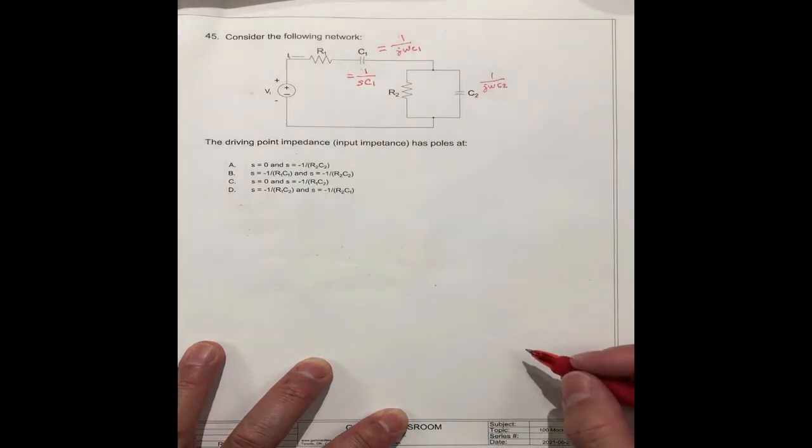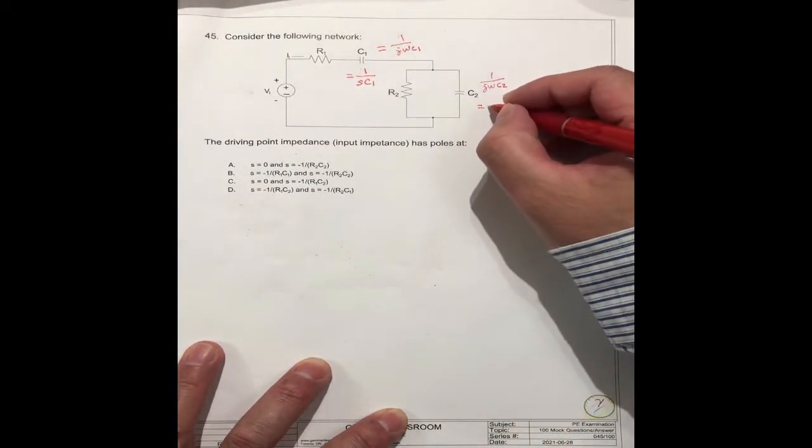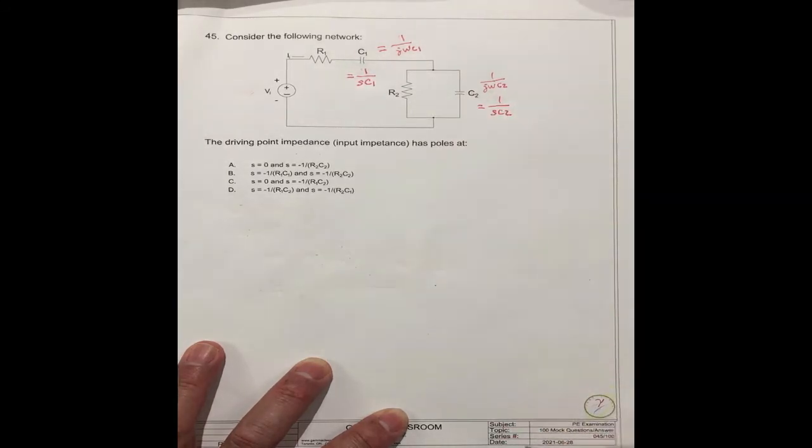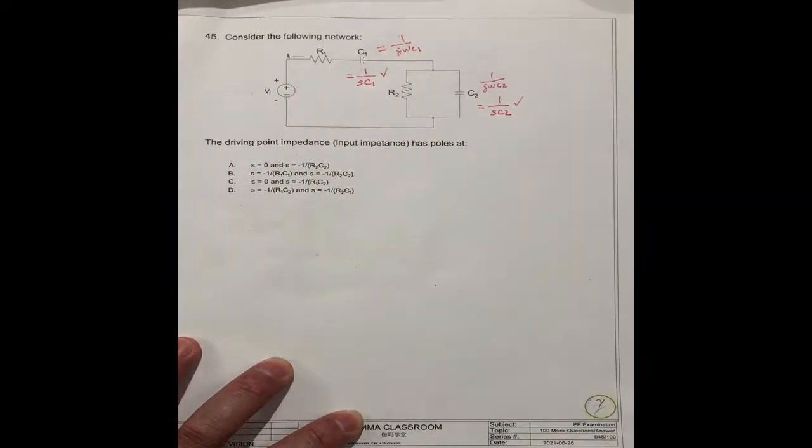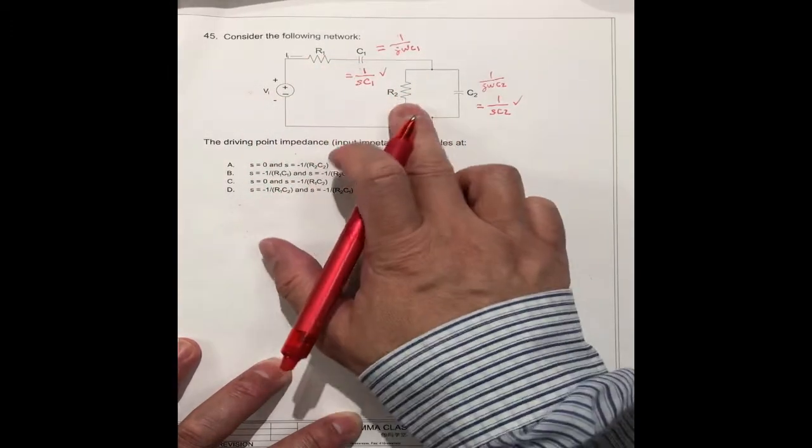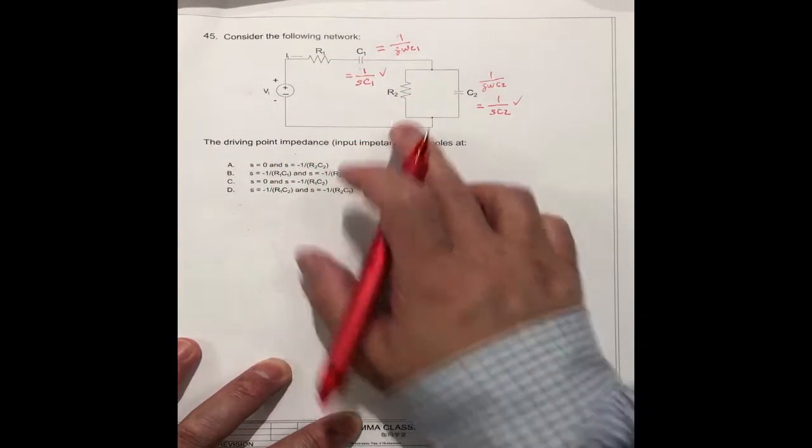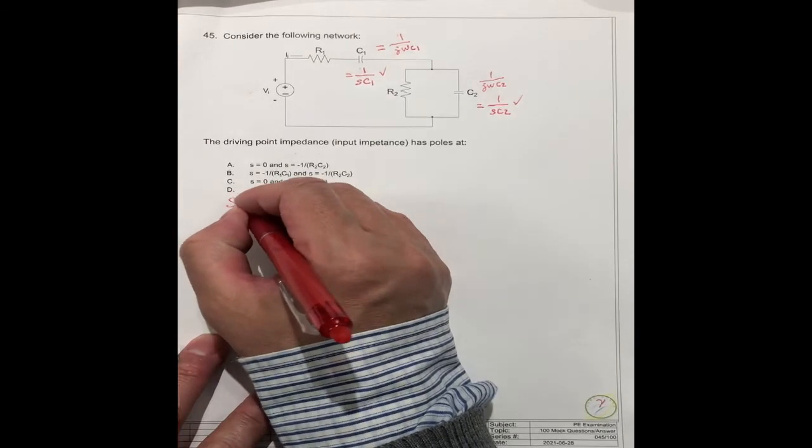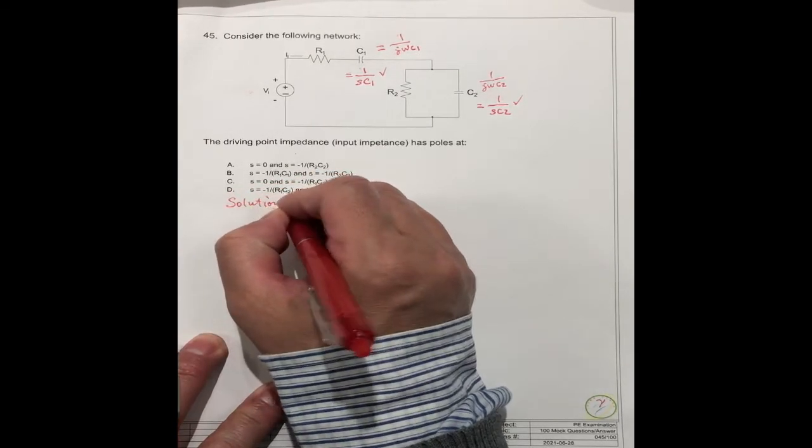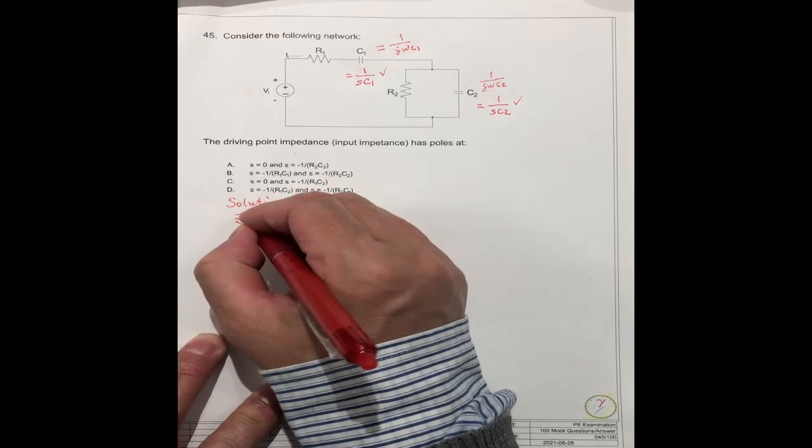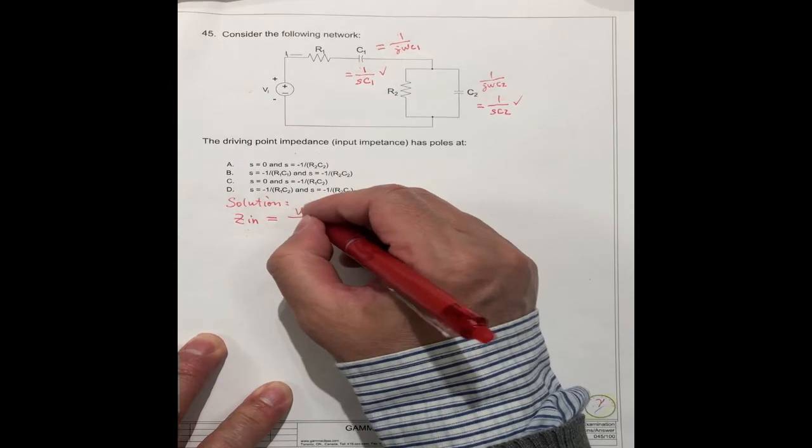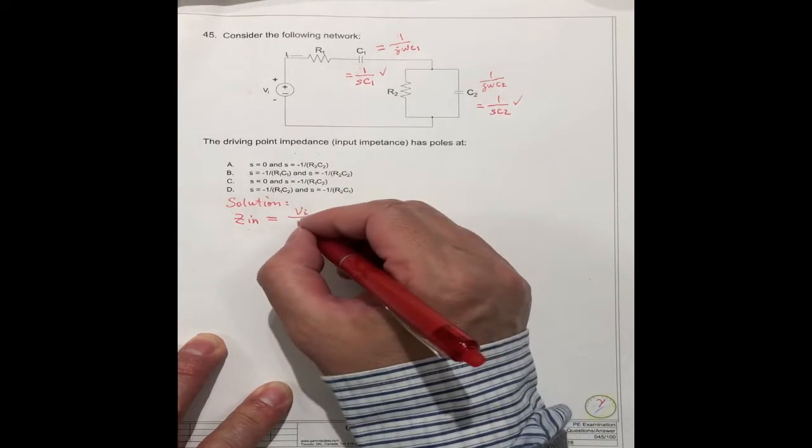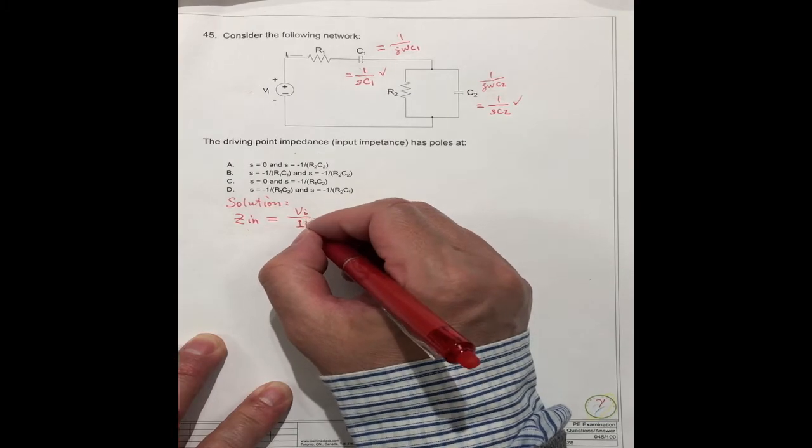1/(SC1), this equals 1/(SC2). We use this and we use this. The resistor should be the same. This is series connection, this is parallel connection. So the solution, the impedance, the input impedance should be equal to the voltage V divided by current I.